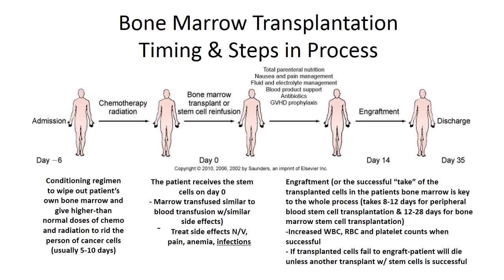From day zero to about day 14, patients require continuous nausea and pain management, fluid and electrolyte management — including IV fluids and potassium replacement — and blood product support such as platelets and packed red blood cells. Antibiotic treatment and graft-versus-host disease prophylaxis are also needed. Patients may also need TPN or central venous nutrition to aid in healing.